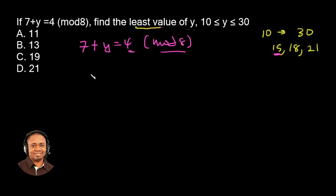So what that basically means is that, let me just do on the left hand side, 7 plus Y, if we are divided by 8, the remainder should be 4.